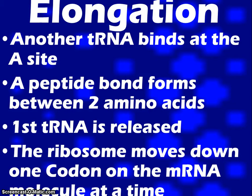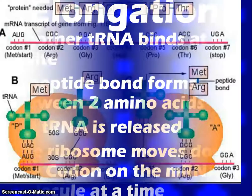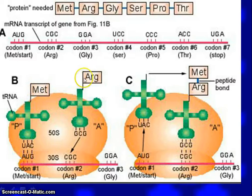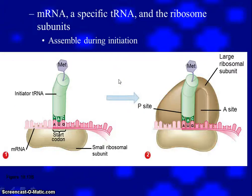Amino acids will come in, they will bond, and they will go to the polypeptide chain. This will happen until it hits a stop. We're bringing them in — the first A site gets an amino acid, another amino acid comes in, a bond forms, and then that first tRNA will go away.